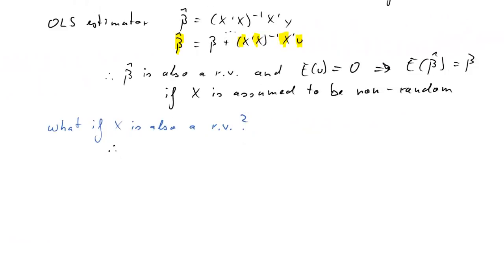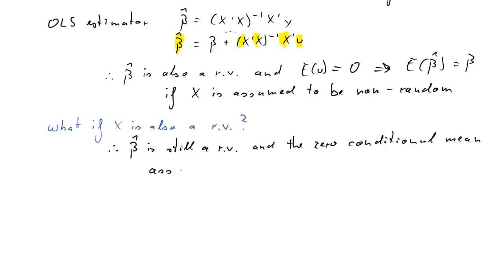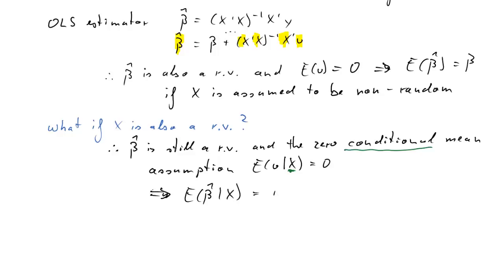As it turns out, beta hat is still a random variable. Now we need a slightly different additional assumption: the zero conditional mean assumption. That assumption says that the expected value of u, conditional on x, is equal to zero. This assumption allows us to conclude that the conditional expectation of beta hat is equal to beta, so conditionally we still have an unbiased parameter estimator.